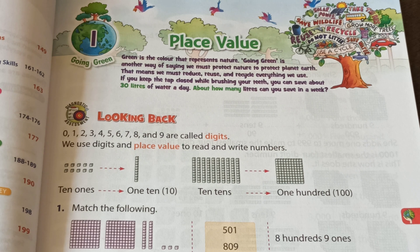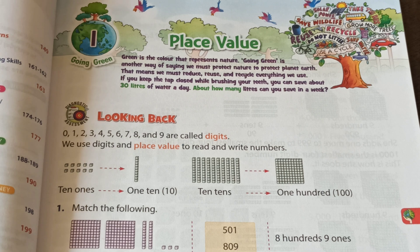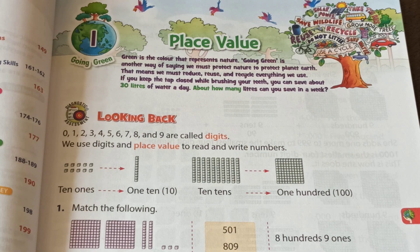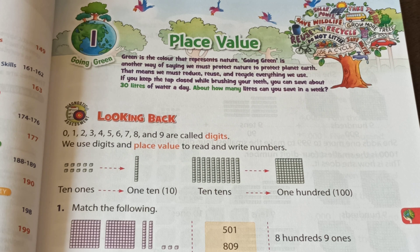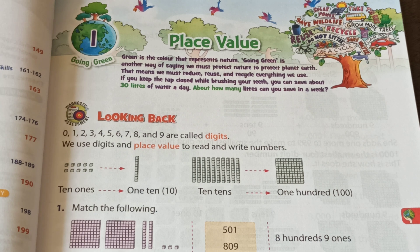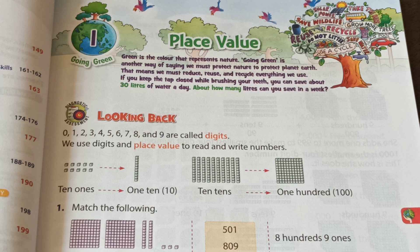Let's come to our first section: Looking Back — which things we learned in our previous class, in second class. Let's see: 0, 1, 2, 3, 4, 5, 6, 7, 8, and 9 are called digits. We use digits and place value to read and write numbers.